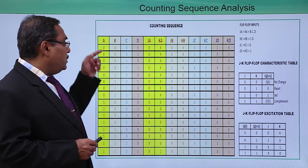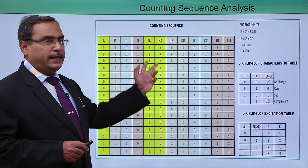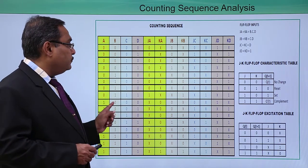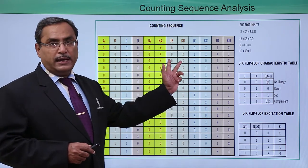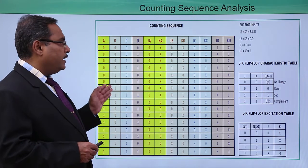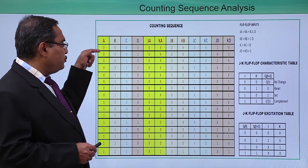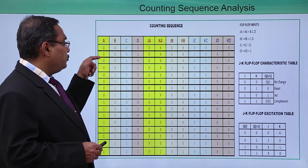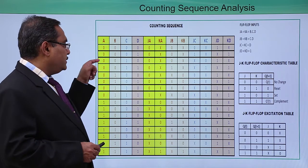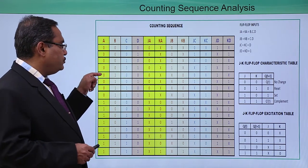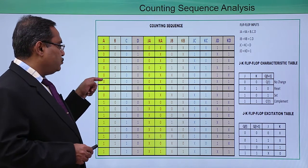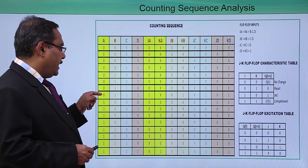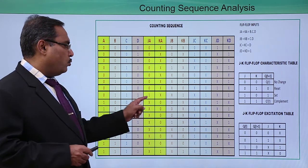We shall consider the A column and fill up the JA/KA entries. We have done the color matching accordingly. For the A bit: 0-to-0 transitions give 0x, and this continues as long as A stays at 0. When we encounter a 0-to-1 transition, the required input is 1x.